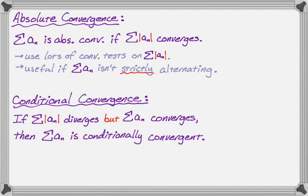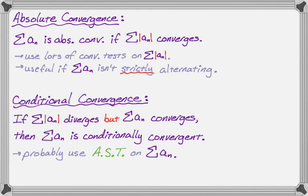When you're dealing with this, you're probably going to end up using the alternating series test on the sum of a sub n. So those are the two ideas: absolutely convergent means you take the absolute value of the nth term and see if that series converges. Conditional convergence means that after you took the absolute value it didn't converge, but when you use the alternating series test it probably does converge — so that'll be conditionally convergent.